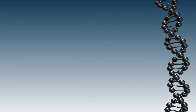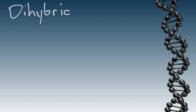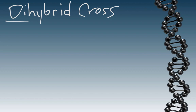So now let's get into the gist of what we call a dihybrid cross. A dihybrid cross involves two different traits at the same time. When we say 'di,' di means two. So this is going to be a Punnett square that uses two traits at once.